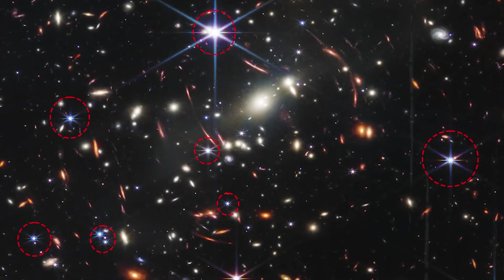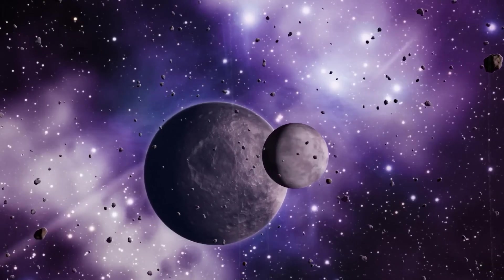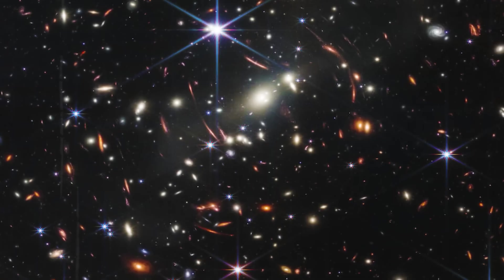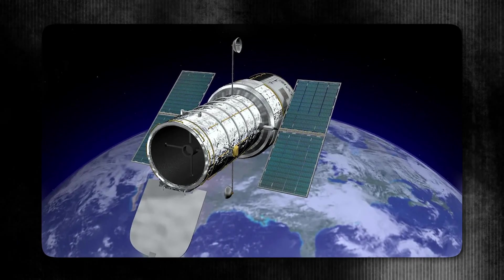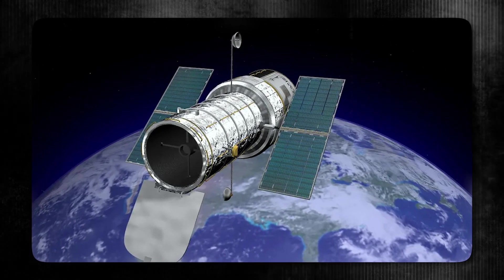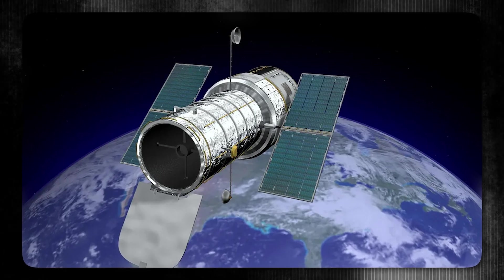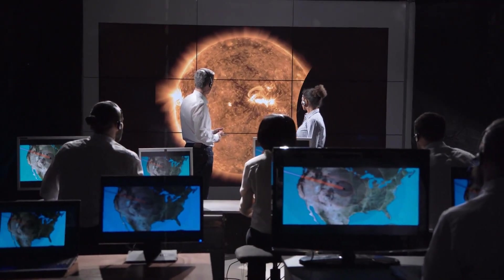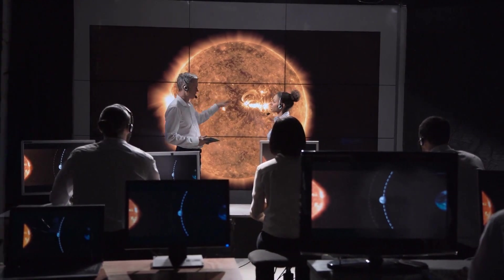This is where the James Webb Space Telescope, JWST, excels. Unlike earlier telescopes, JWST can peer through these dusty shrouds with its mid-infrared instrument, MIRI, unveiling unprecedented details. Compare this image to Hubble's; JWST provides a clearer, more detailed view, allowing scientists to probe the hidden intricacies of stellar nurseries. The data it gathers will fuel star formation research for years to come.